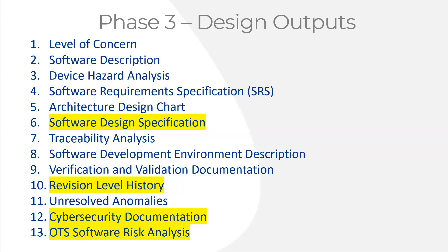Before reaching that iterative development, you need to identify design specifications for your software, maintain a revision level updated every time you make a change, and go through the cybersecurity documentation to document what risk controls you'll put in place. Any off-the-shelf libraries or operating systems you use require a documented risk analysis. So in this phase, you're not only documenting design specs but also conducting and documenting risk analysis and risk evaluation. Each time you compile and verify or validate — whether unit test or integration test — if you fail, you go back to your design outputs and update them.